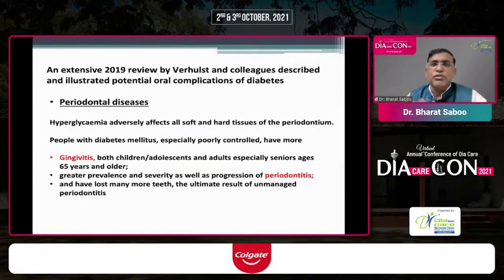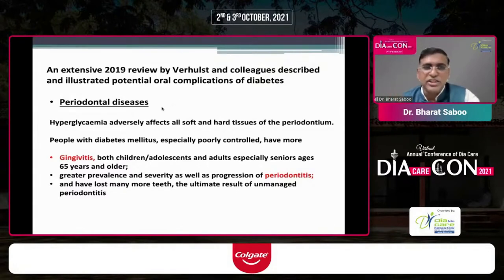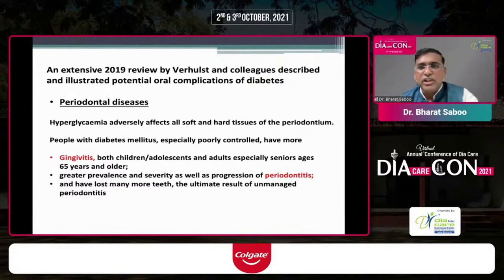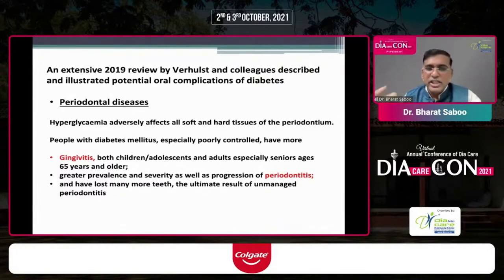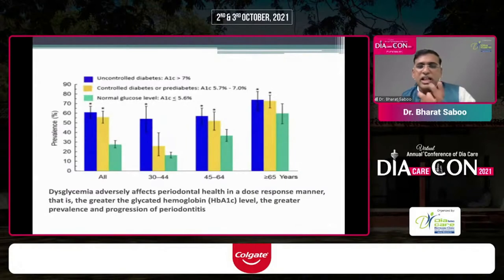A very recent review by Verles and colleagues described the illustrated potential oral complications of diabetes. It showed that periodontal diseases are affected by hyperglycemia because hyperglycemia affects all the soft and hard tissue of the periodontium. Gingivitis is more common in diabetes, there is a greater prevalence of periodontitis, and tooth loss is again more common in diabetes.